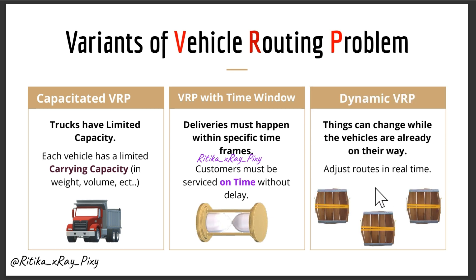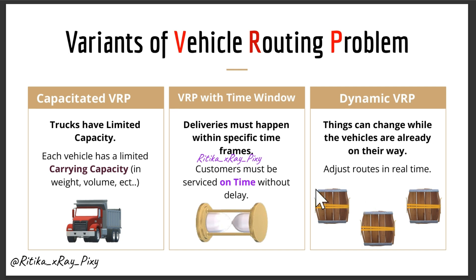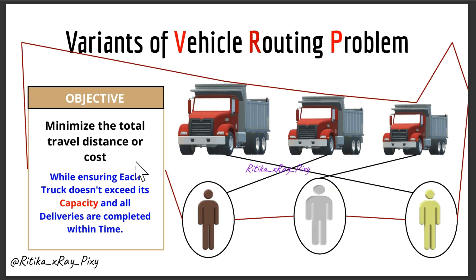The third variation is Dynamic VRP. In dynamic environments, things can change while vehicles are already on their way, such as new orders coming in or traffic jams. For example, if a driver is halfway on their route and a new delivery request appears, we need to reroute the vehicle. Each variation makes the problem more complex, and we need efficient routes that lower fuel cost, enable faster deliveries, satisfy customers, and reduce environmental impact.